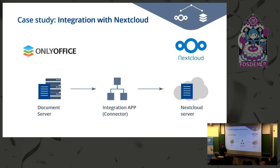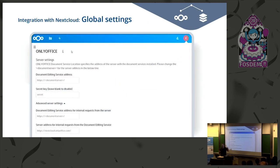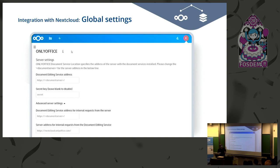Let me briefly explain how the connector with Nextcloud looks. You need to create global settings and user settings. We built an admin menu for Nextcloud with a few fields — the first being the document editing service address, which is the address of the ONLYOFFICE Document Server. That server must be accessible from both Nextcloud storage and from the client, and Nextcloud storage must also be accessible to the document server for downloading files. There's also a secret key field — very important — which allows you to sign all requests.